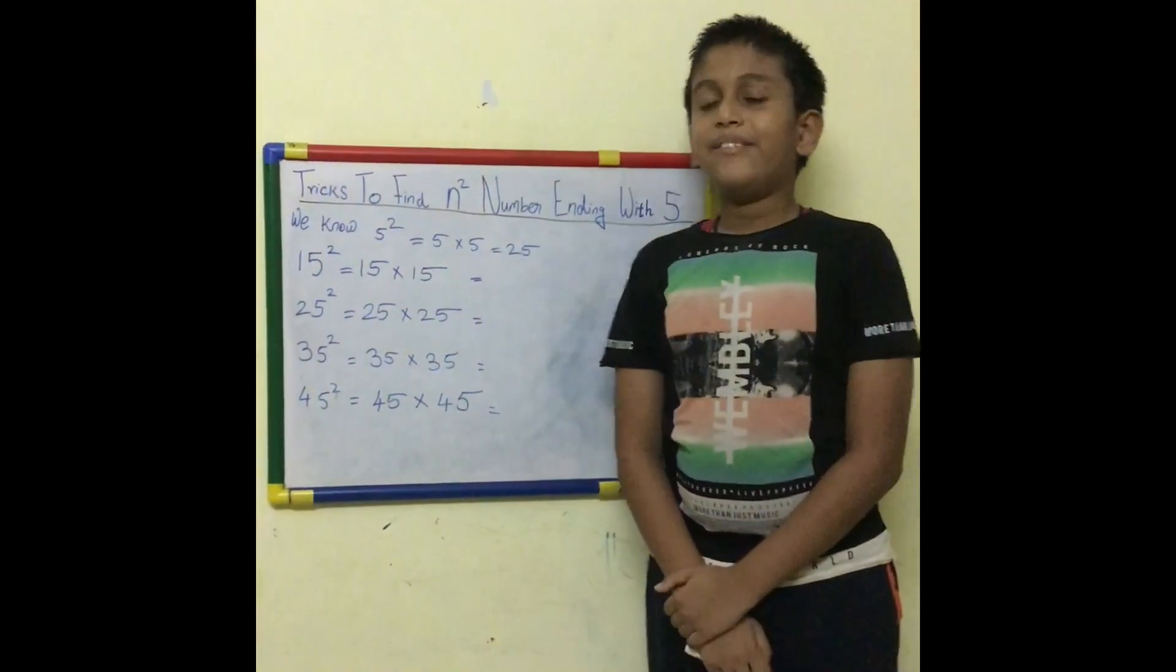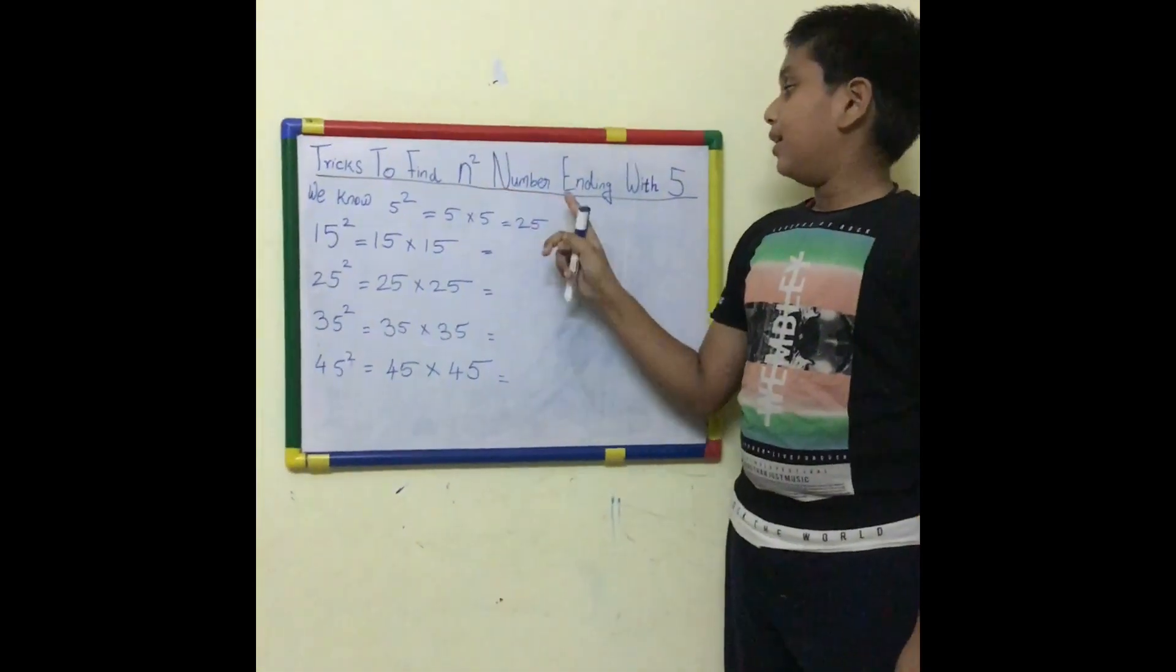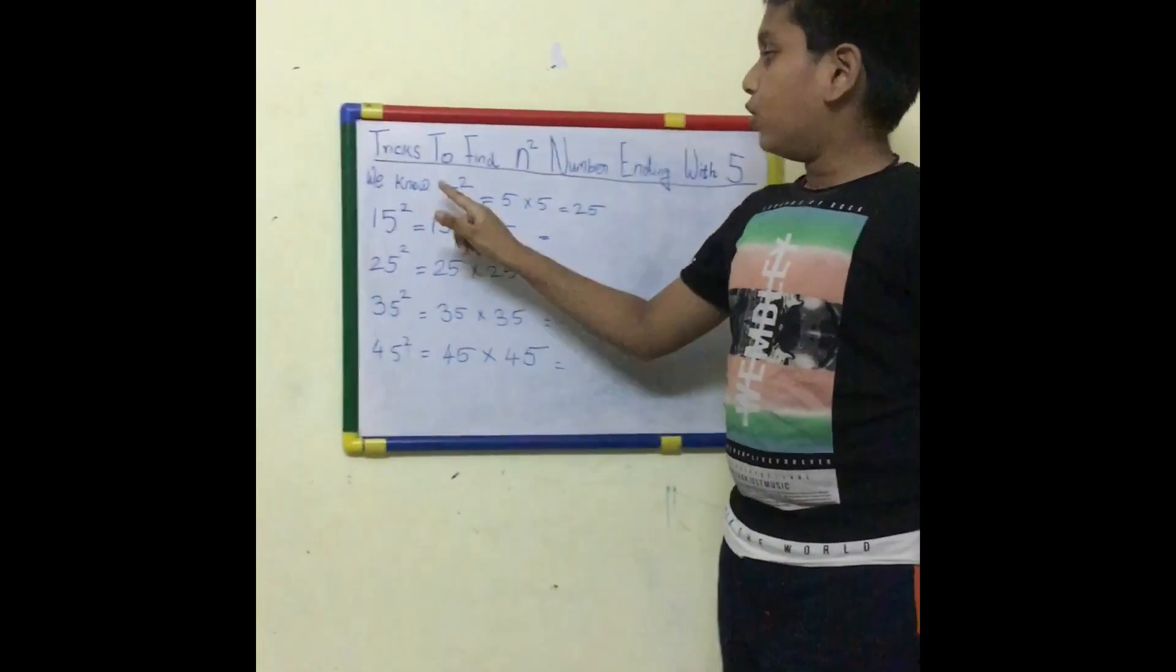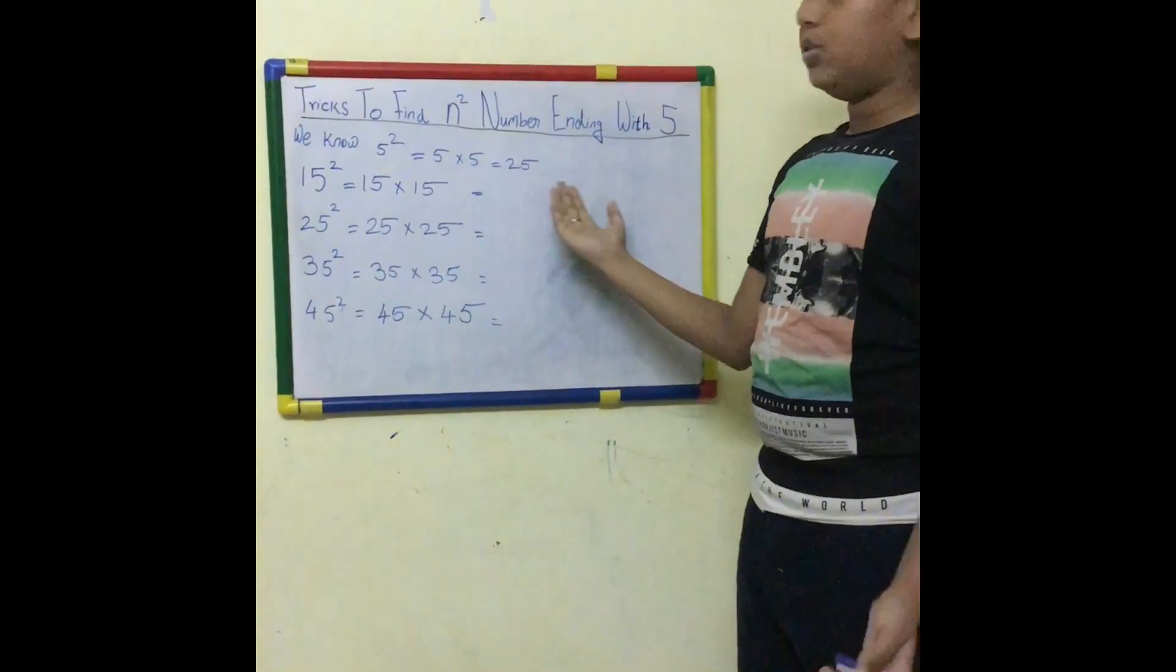Hello friends, welcome to Standing Suganesh. Today we are going to learn about N squared numbers ending with 5. We know 5 squared equals 5 into 5 equals 25.